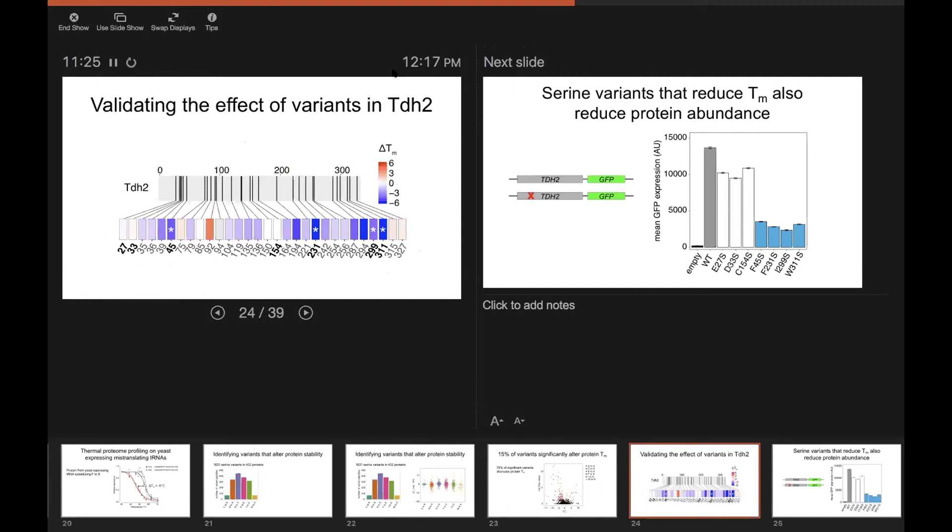So the first thing we wanted to do was to actually see if the variants we identify as stabilizing or destabilizing really are having an effect on the protein. So we chose one protein to validate mutations in that had kind of multiple destabilizing mutations in it. And so that's this GAP-DH homolog TDH2.